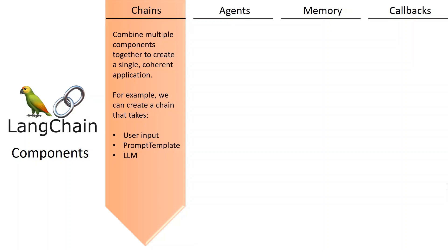This idea of composing components together in a chain is simple but powerful. It drastically simplifies the implementation of complex applications and makes them more modular, which in turn makes it much easier to debug, maintain, and improve your applications. There are multiple types of chains available, with the basic one being LLMChain.